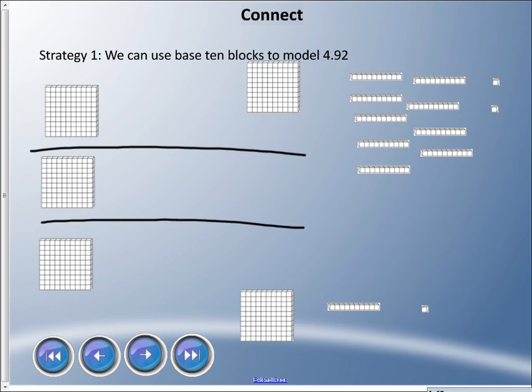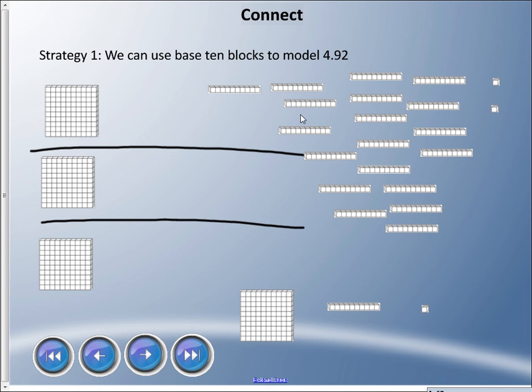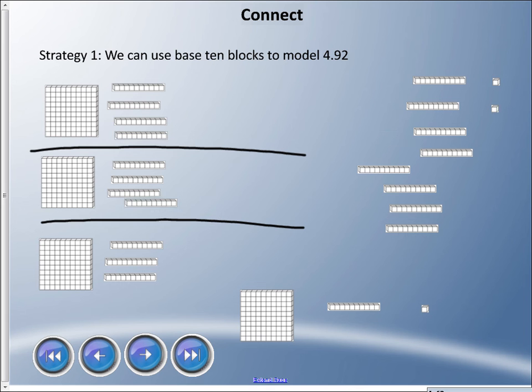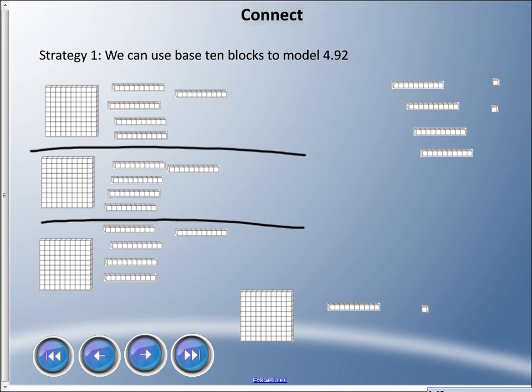But here's the problem: I have this one whole left over. What I can do is trade him in for some rods. I'm going to get rid of him and pull out 10 of these tenths. Now I'll put one on each group, sorting them out. If you like this visually, you can just use squares and lines and it'll add up just the same way.